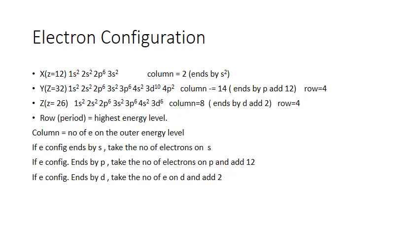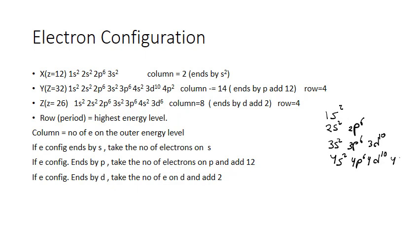To make a correct electron configuration, write the sublevels in this order: 1s2, 2s2, 2p6, 3s2, 3p6, 3d10... The sublevels are s, p, d, and f. Each sublevel is filled by a certain maximum number of electrons: s holds 2, p holds 6, d holds 10, and f holds 14 electrons.